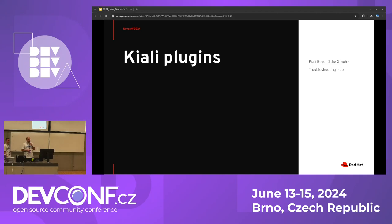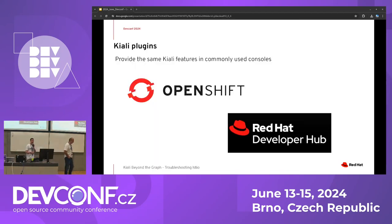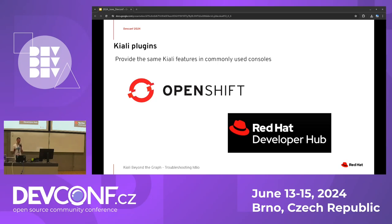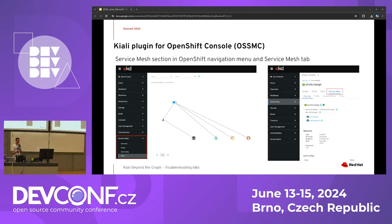Now I'm going to talk about the Kiali plugins. All the slides shown so far relate to the Kiali standalone application, which is great, but nowadays people want all information integrated in one console. Our idea was to show Kiali information integrated in the OpenShift console and even in the Red Hat Developer Hub, which is based on Backstage. First I'll talk about OSSMC — the OpenShift Service Mesh Console — which is a Kiali plugin for OpenShift.